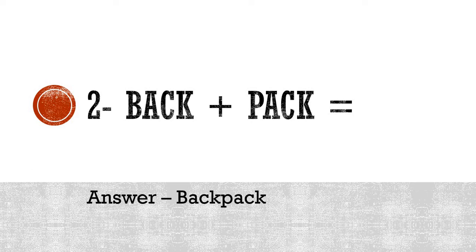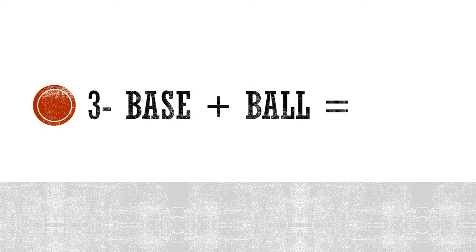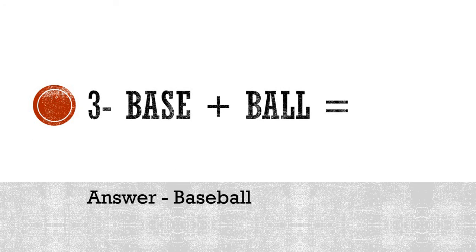Number three: base — B-A-S-E — plus ball — B-A-double-L. If you notice, 'base' has a different meaning and 'ball' has a different meaning — both words are different — but when you combine them, you get one particular word with one meaning. The correct answer is 'baseball' — it is a name of a game, like cricket or volleyball. Please write it down — B-A-S-E-B-A-double-L — baseball. As it is a proper noun, the first alphabet is capital.